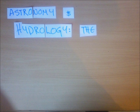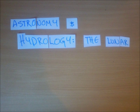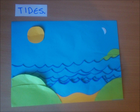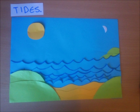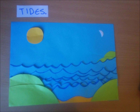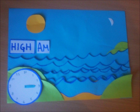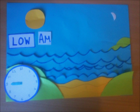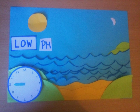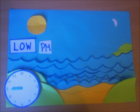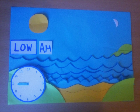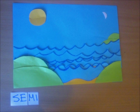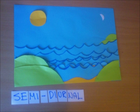Astronomy and hydrology: the lunar effect on Earth's tides. Tides are the rise and fall of the water level in Earth's oceans every day. Usually this happens twice a day, so there are two low tides and two high tides, about six hours apart. This is called a semi-diurnal tide pattern.